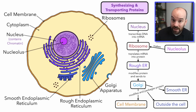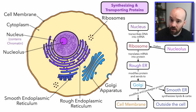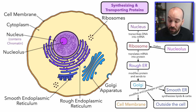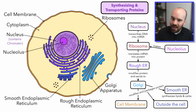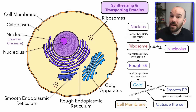One organelle proteins can be sent to is the smooth endoplasmic reticulum. One big difference to remember about the smooth ER is it doesn't have ribosomes on it, and its function is very different. Whereas the rough ER was focused on modifying the protein, the smooth ER is going to be making or synthesizing lipids and carbohydrates. The proteins sent to the smooth ER act as enzymes — enzymes facilitate chemical reactions — and we need those enzymes to synthesize the lipids and carbs we need. So even the instructions on making lipids and carbs all come back to that DNA.